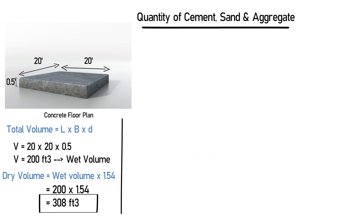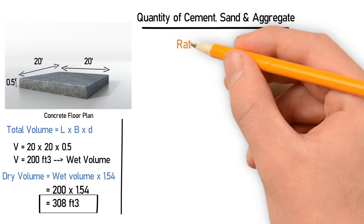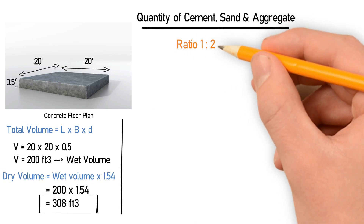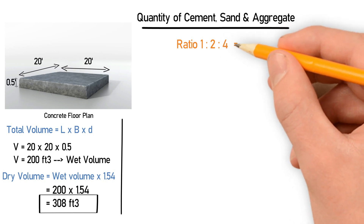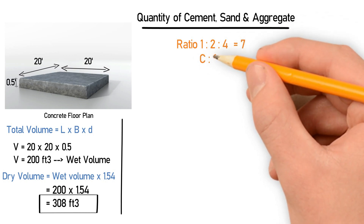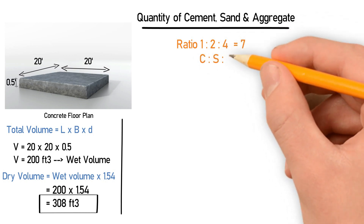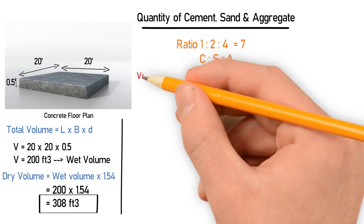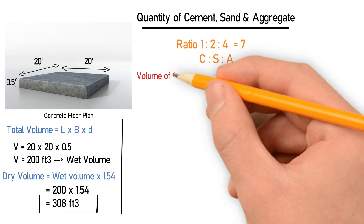We will be using the concrete grade ratio 1:2:4, the sum of which is equal to 7. Here, 1 denotes cement, 2 is sand, and 4 is the ratio of aggregate.